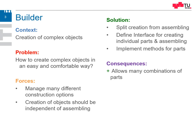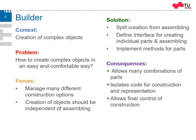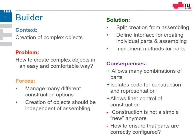The consequences after applying it: it allows many combinations of parts. It isolates the code for the construction and representation of the parts. Then it allows a finer control of the construction process in general. But construction is not simple anymore — it takes several method calls to create an object.